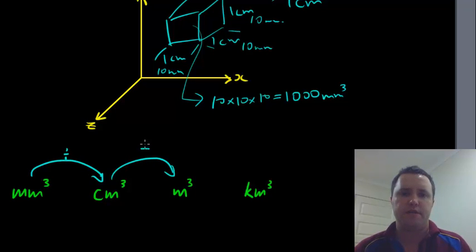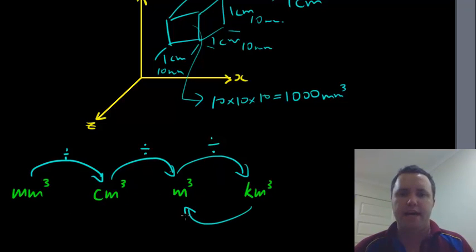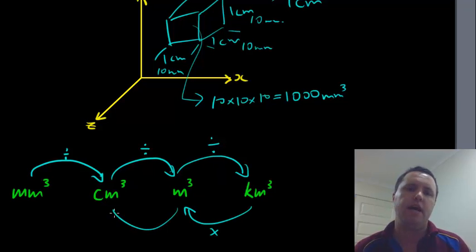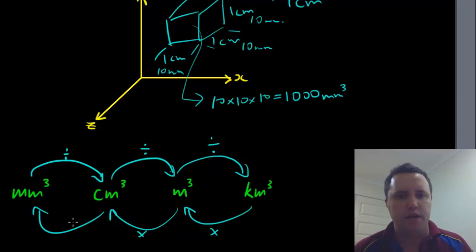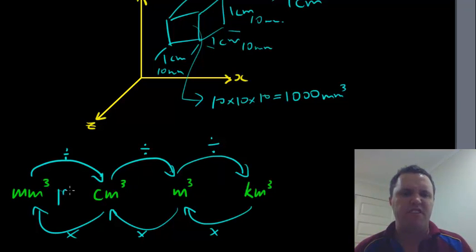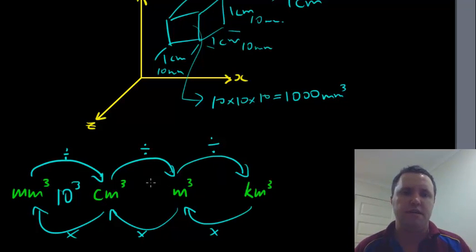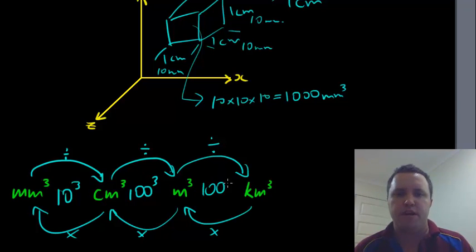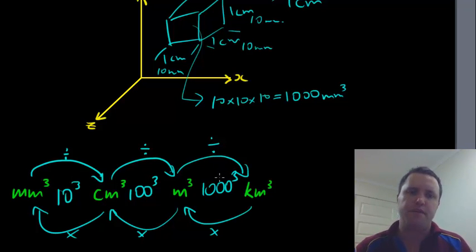When converting units of volume — cubic millimetres, cubic centimetres, and so on — the same rule applies: divide as you go up the scale of units, and multiply when going back down. Before we had 10 for length and 10 squared for area; now for cubic units we multiply or divide by 10 cubed. For the next step up it's 100 cubed, and for the next it's 1000 cubed, as we move up and down the volume scale.